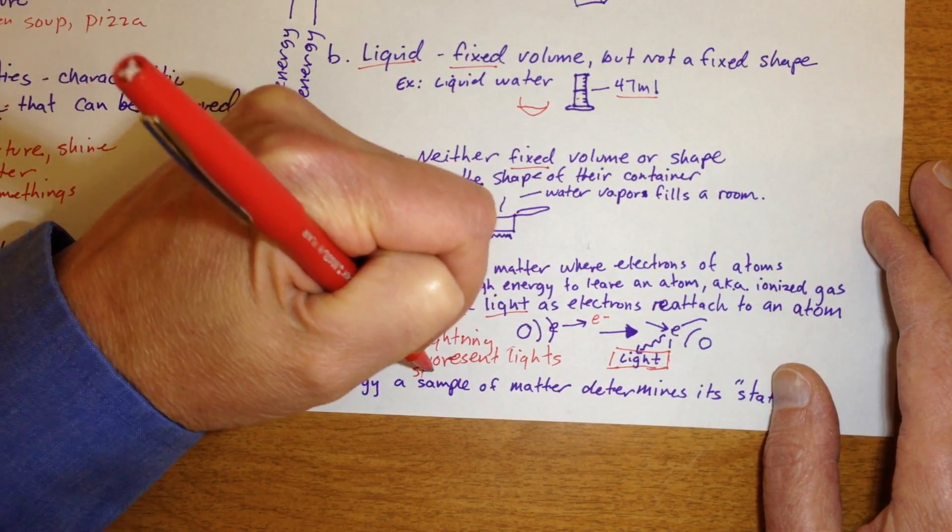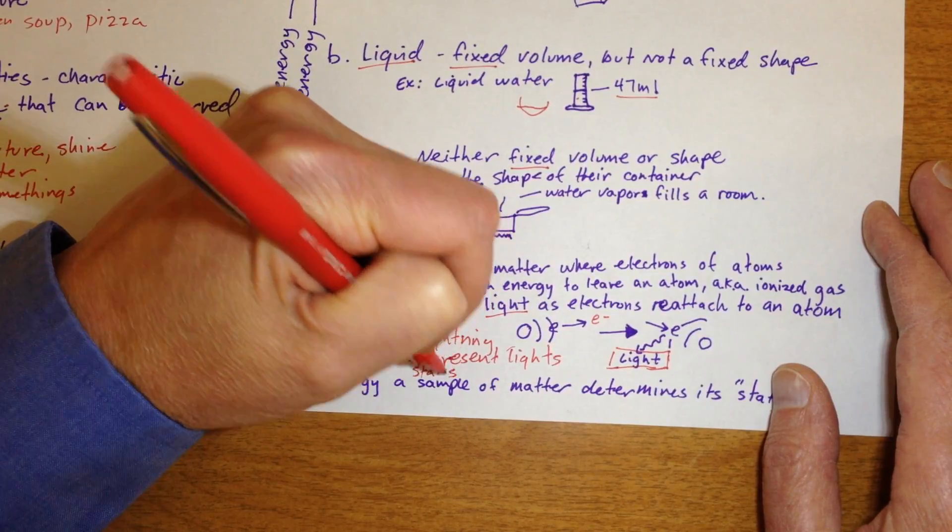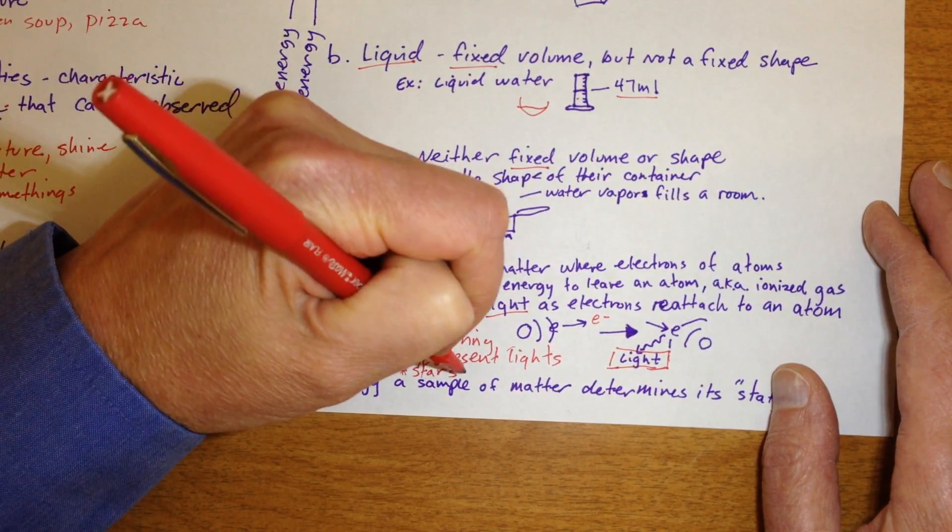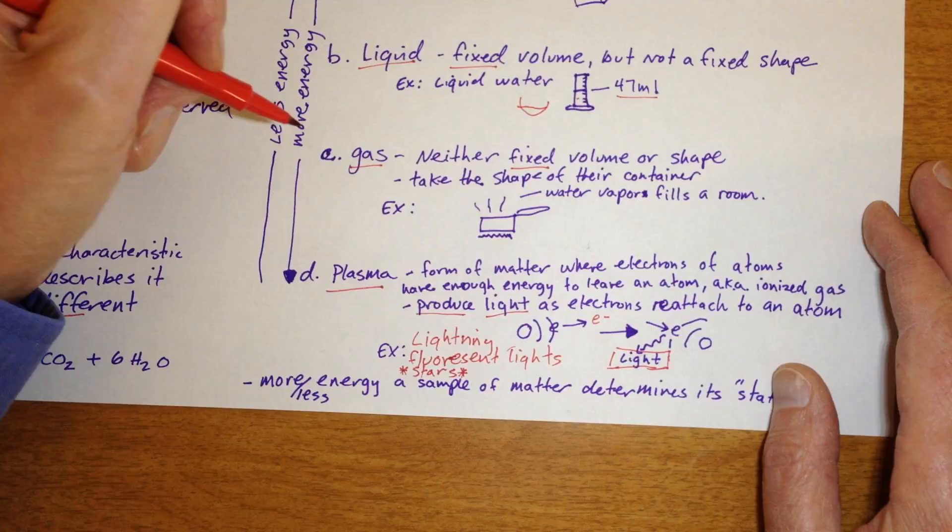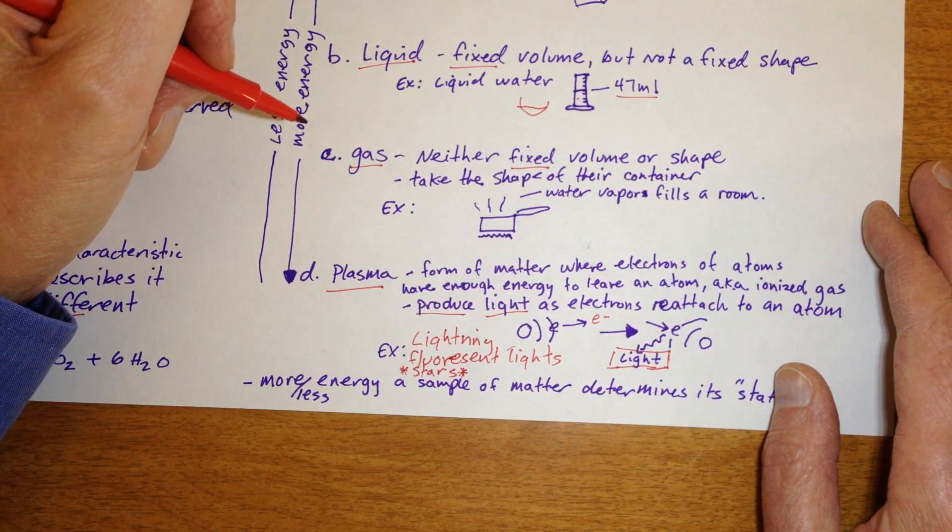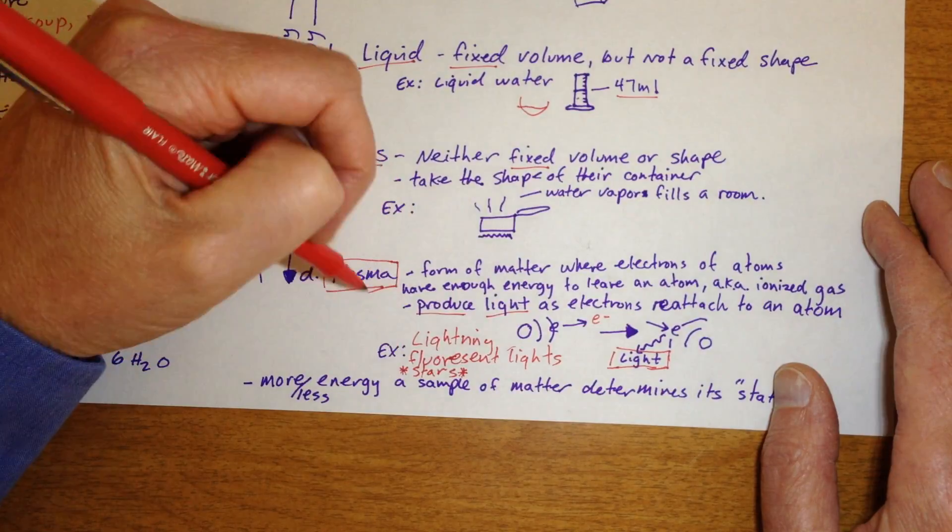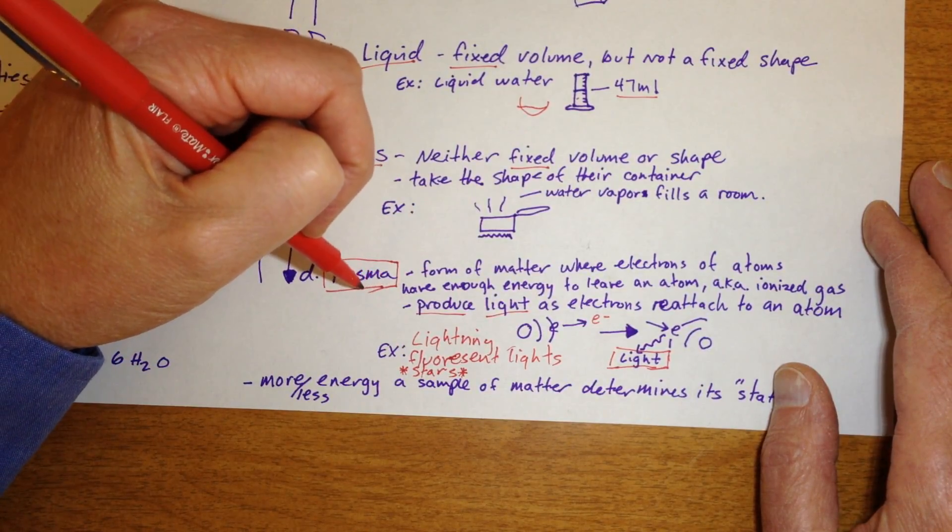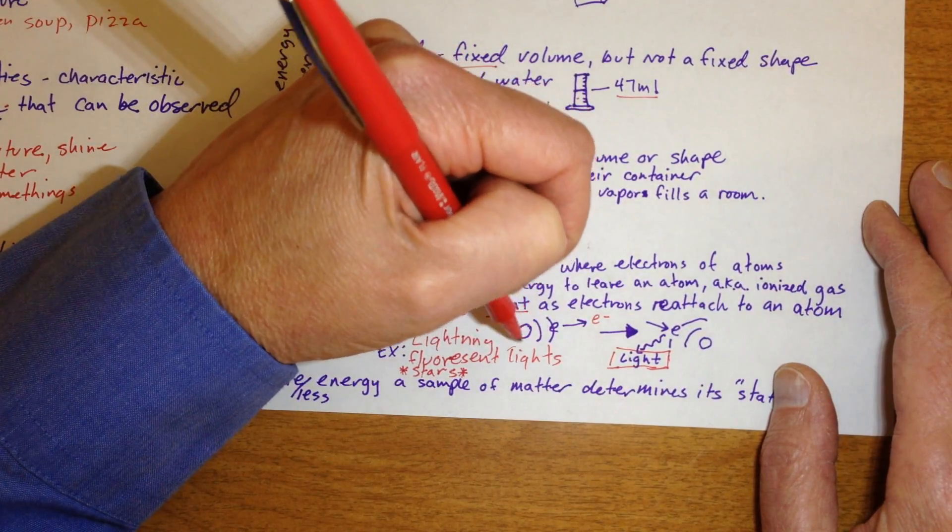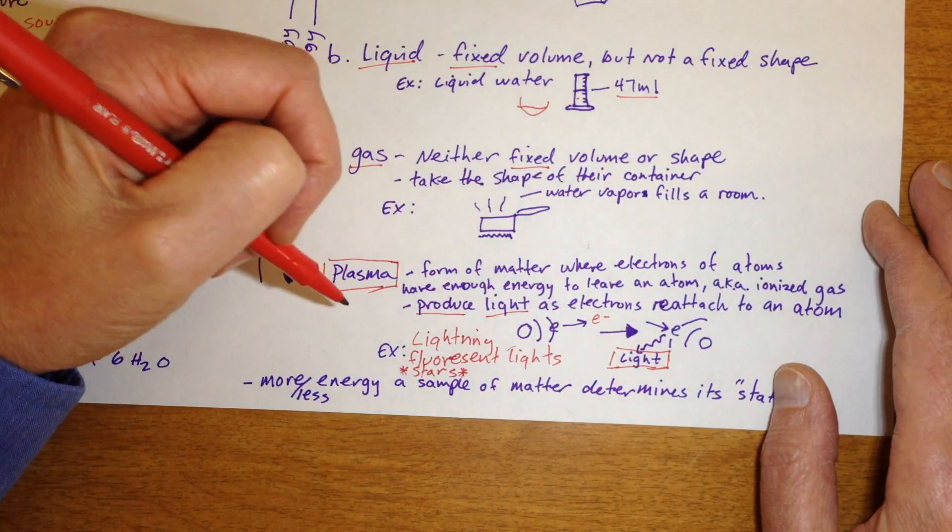But the major source of plasma in the universe and the major state of matter in the universe is in stars. That's the plasma inside of stars because they have so much heat and energy. There aren't even molecules in stars. And the nuclei often have their electrons ripped off of them.